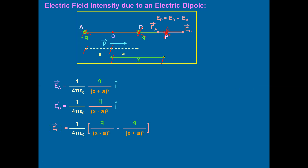The net electric field EP = (Q/4πε₀) × [1/(x−a)² − 1/(x+a)²]. Taking Q/4πε₀ as a common factor, and finding the LCM of the two terms, the denominator becomes (x²−a²)², using the identity (a+b)(a−b) = a²−b². The numerator becomes (x+a)² − (x−a)².